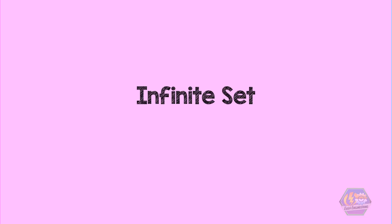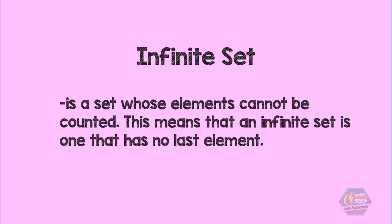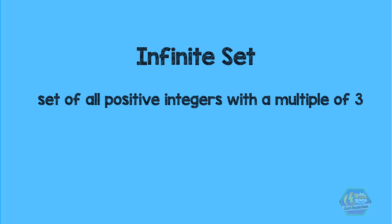Now, let us define an infinite set. An infinite set is a set whose elements cannot be counted. This means that an infinite set is one that has no last element. An example would be the set of all positive integers which is a multiple of three. This is an infinite set because all positive integers which are multiples of three would be endless when we are referring to the number line. Recall that the number line extends to infinity which means that this set is boundless with respect to the positive side.